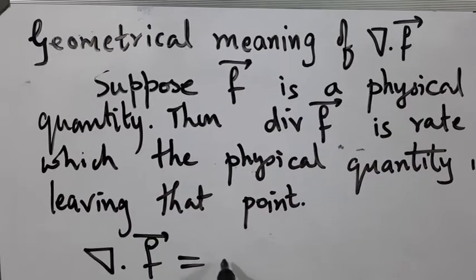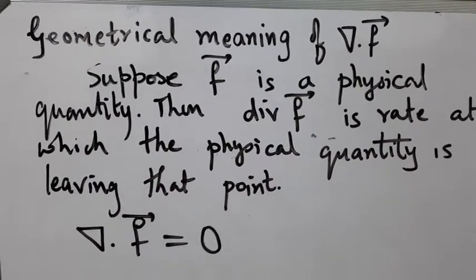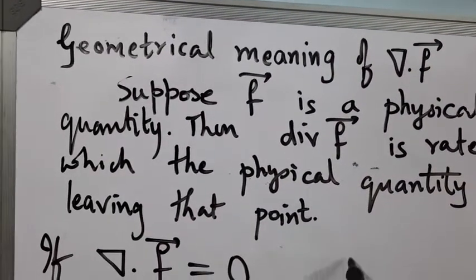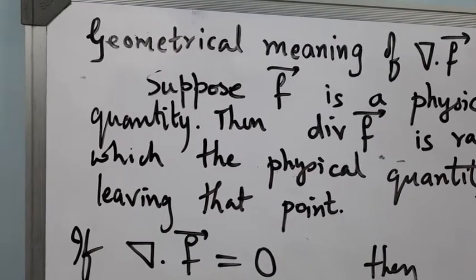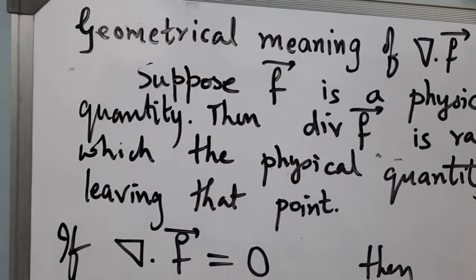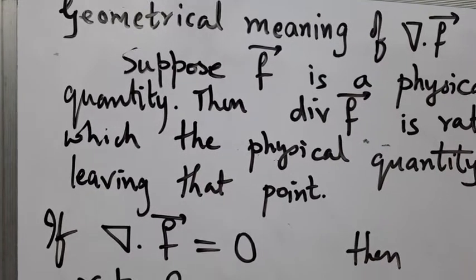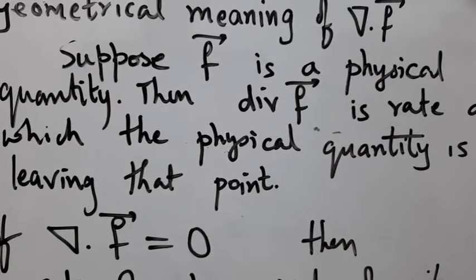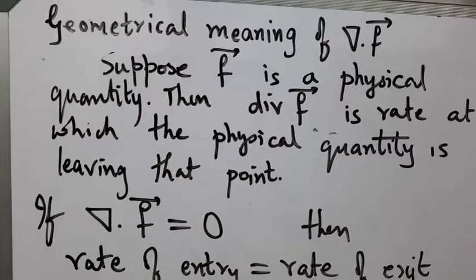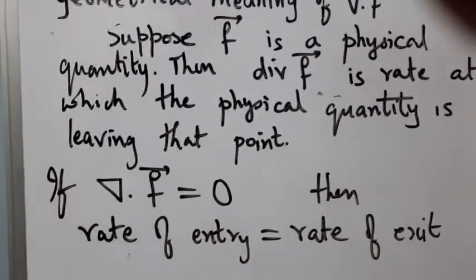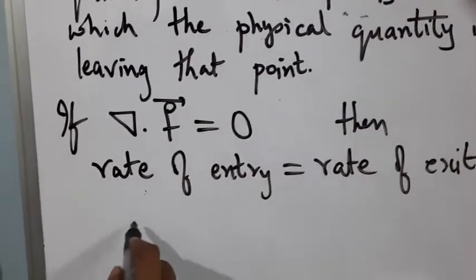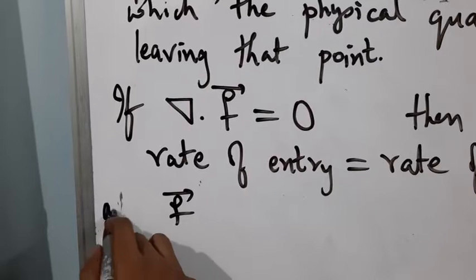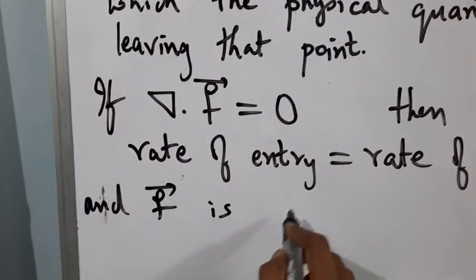Now, if divergence of f equals 0, it means the rate of entry is equal to the rate of exit. In such a case, we call f to be a solenoidal vector.